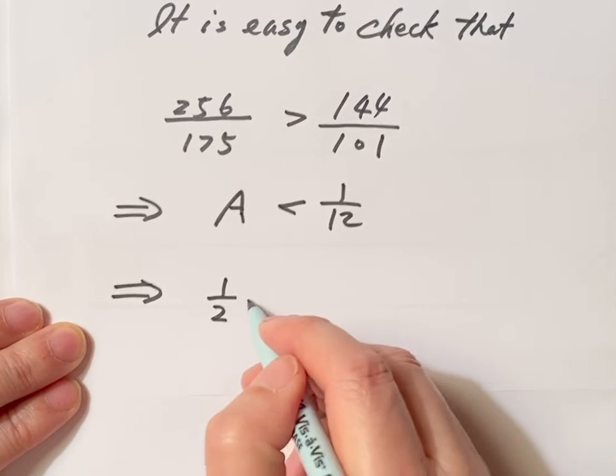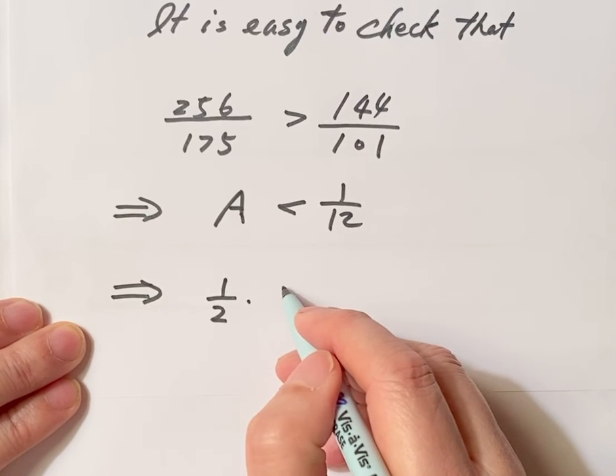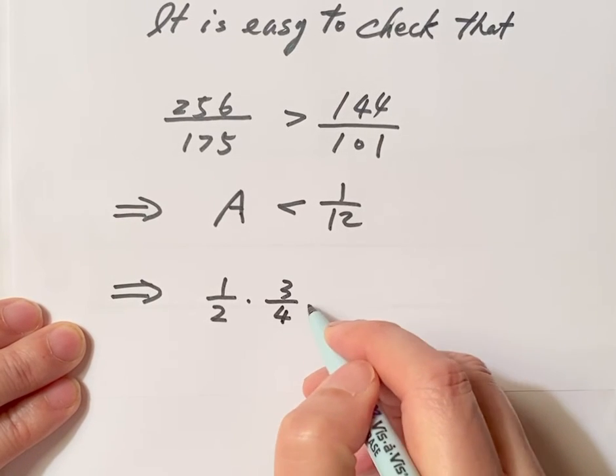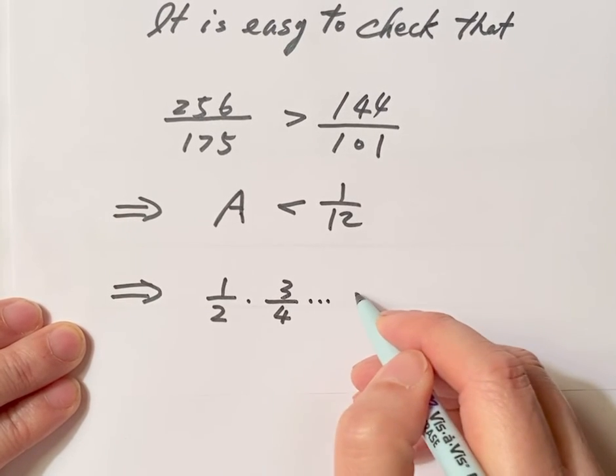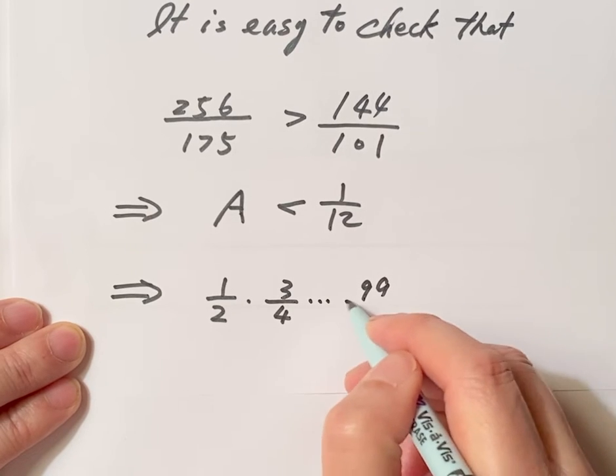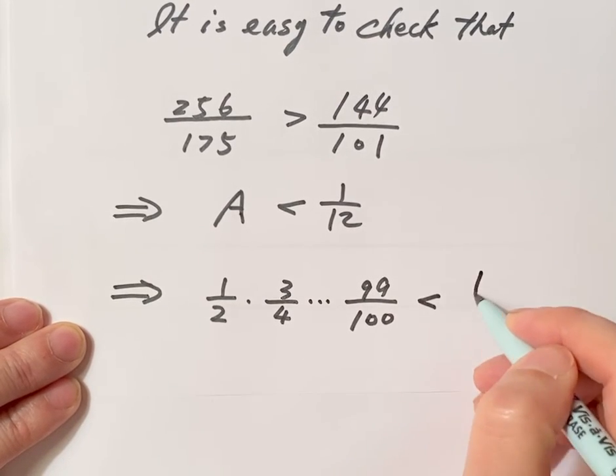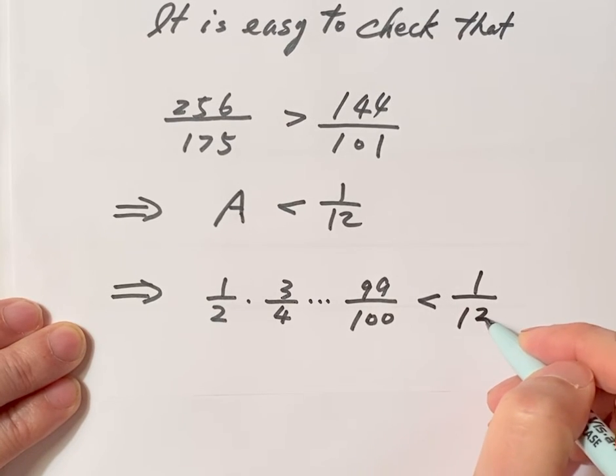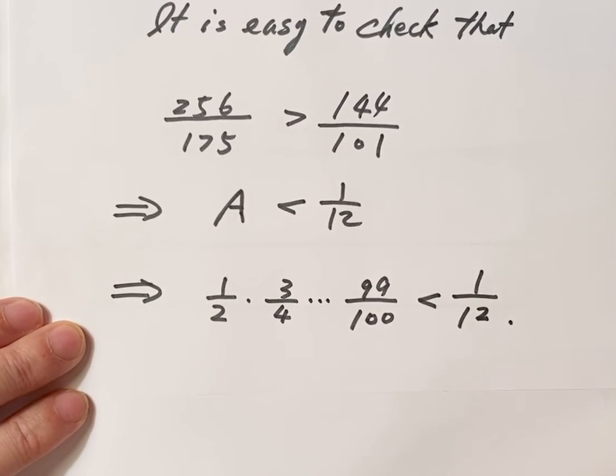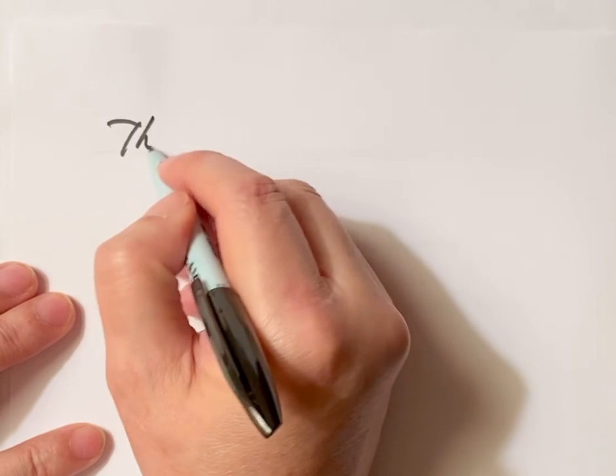This means 1 over 2 times 3 over 4 times 99 over 100 less than 1 over 12. We have done the second method.